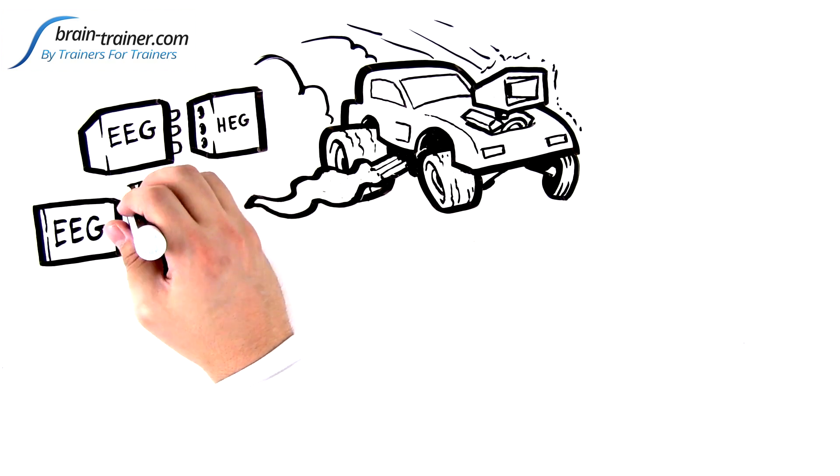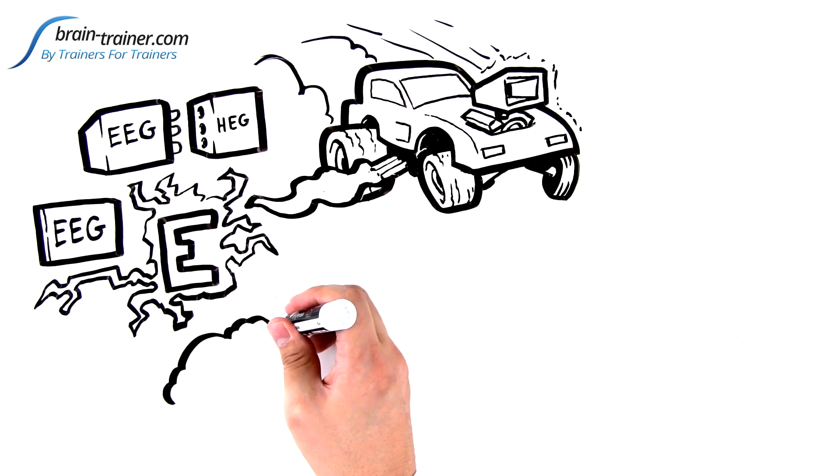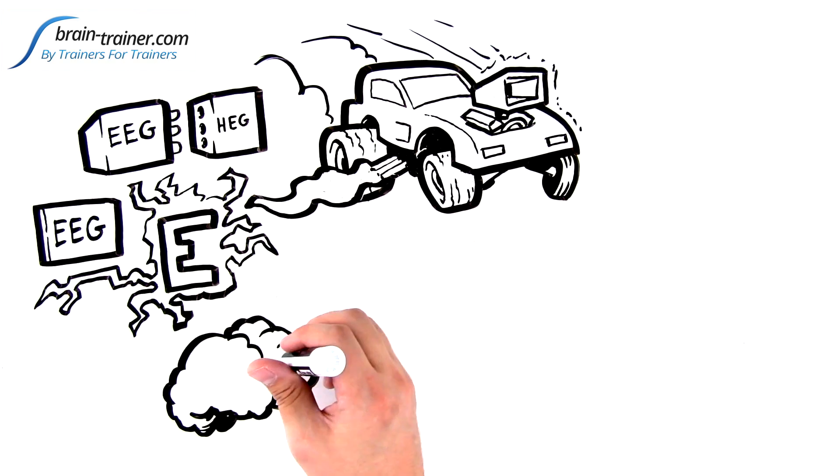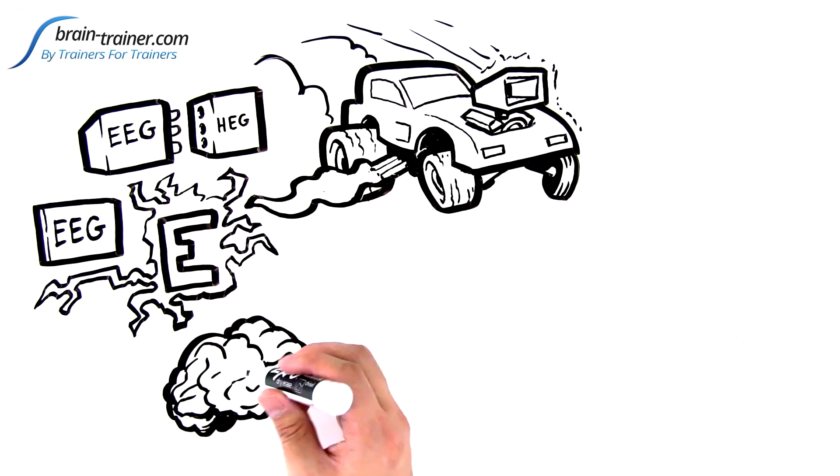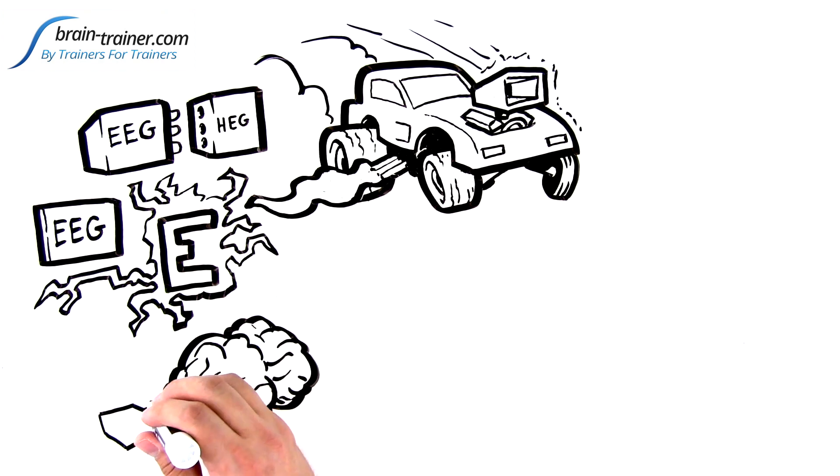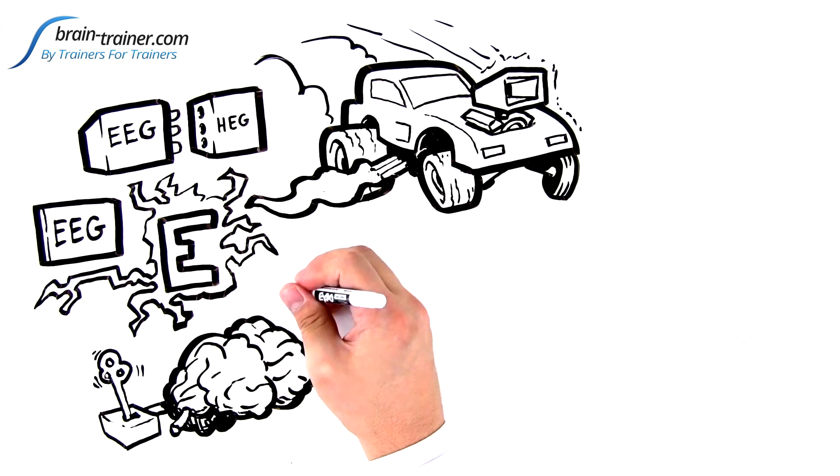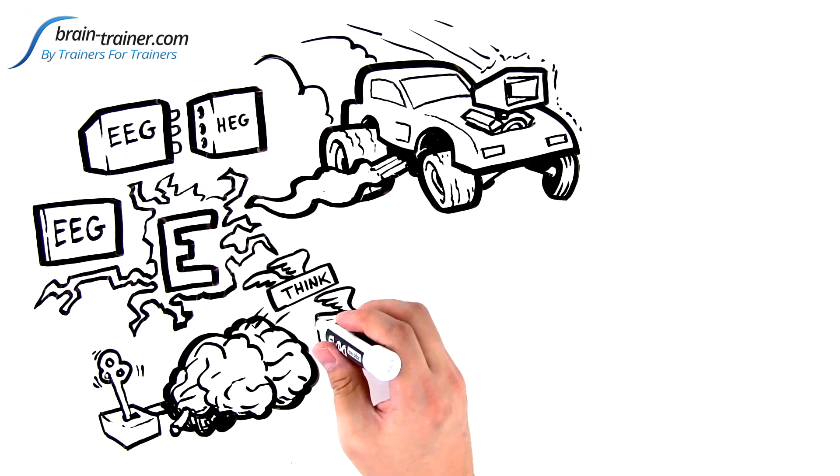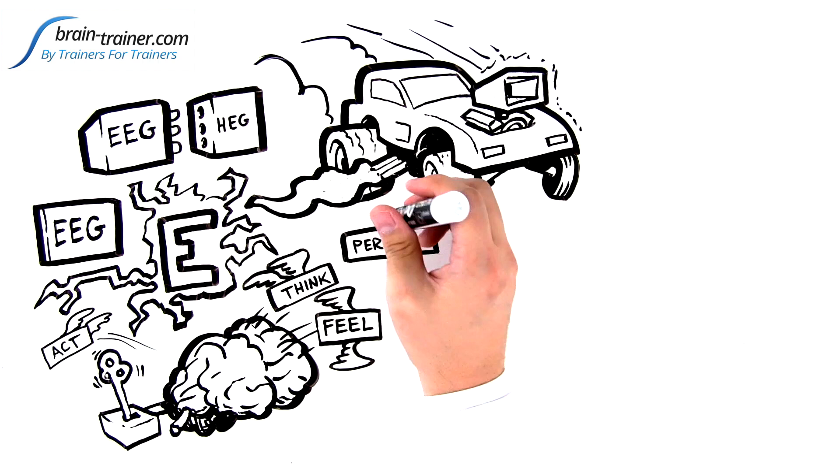EEG begins with E for electricity. Each brain establishes its own habitual patterns of electrical activity over a lifetime of experience. Changing these habits in our brains releases limitations in how we think, feel, act, and perform in lasting ways.